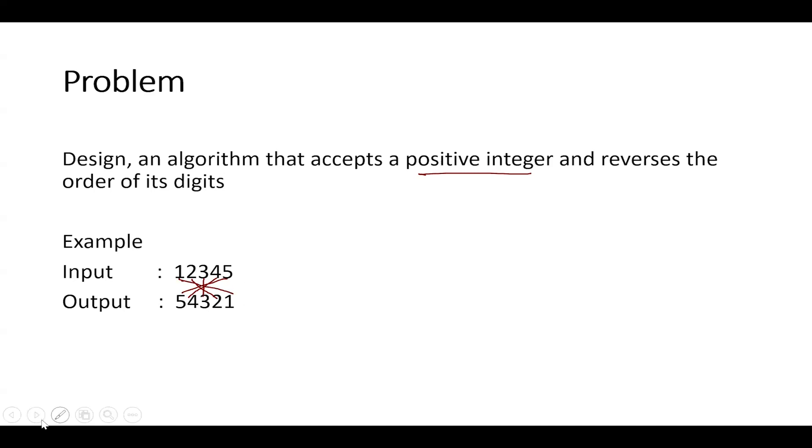So what would be the logic for this? How can we reverse the number? The very first operation we should be learning is mod operation. Now this mod operation is written something like this. This is not percentage, this is not division, this is mod operation. Now how does a mod operation work? Mod operation always returns a remainder. It operates with two operators.